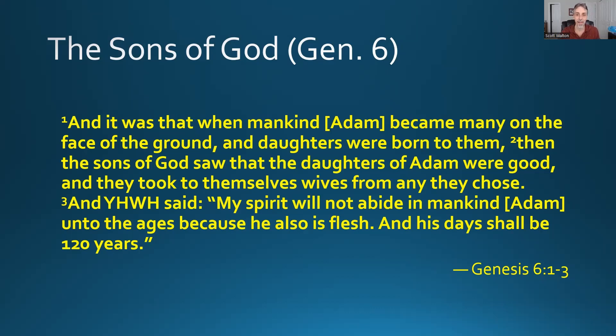Where it says 'mankind' in English, that literally says 'Adam' in the Hebrew — Adam being the prototype for mankind. The word Adam comes from the word for ground, Adamah. So it says Adam became many on the ground — not 'in the land' or 'on the earth.' That's done on purpose; it's designed to call your attention to the previous chapters where Adam was made from the earth. It's a callback to get you thinking about the prior chapters.